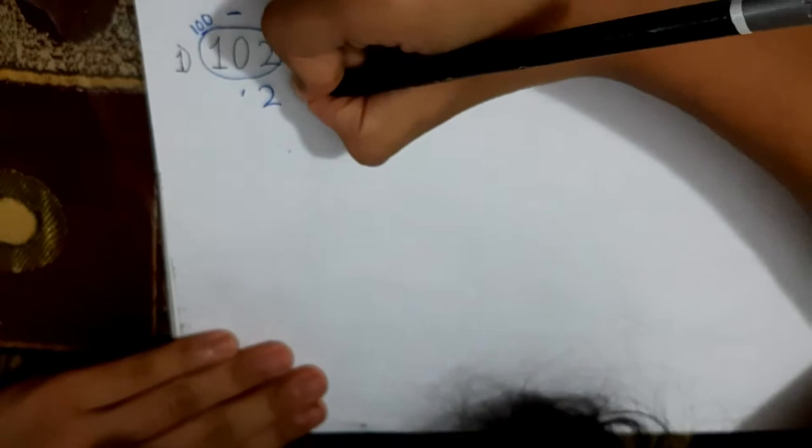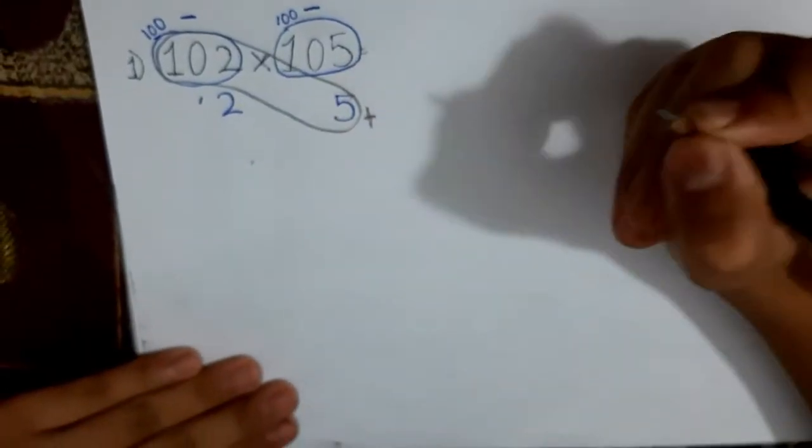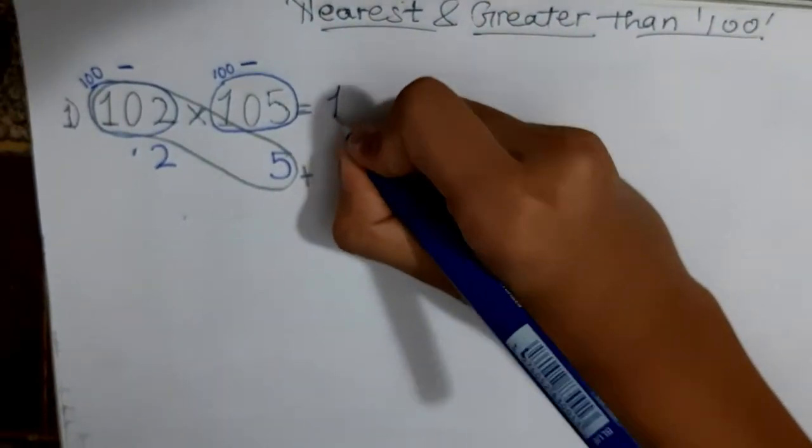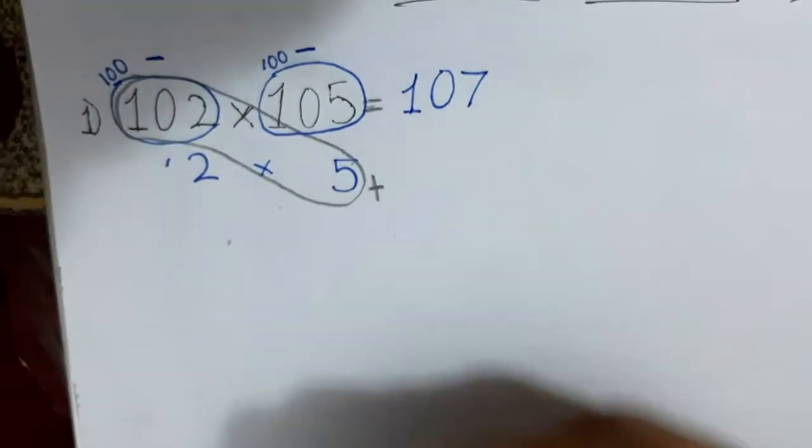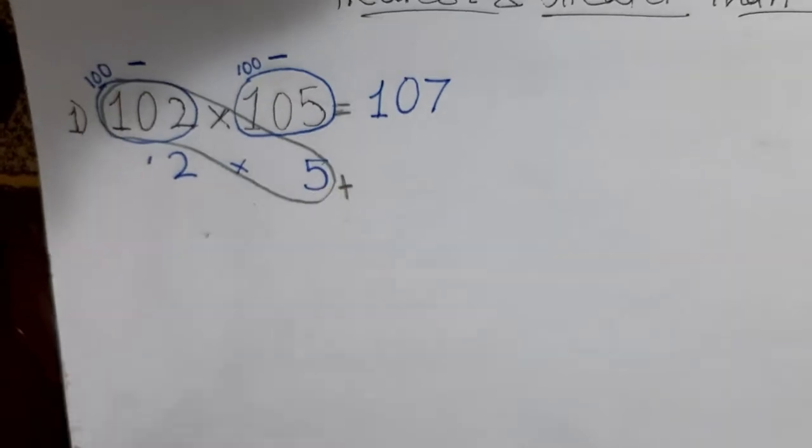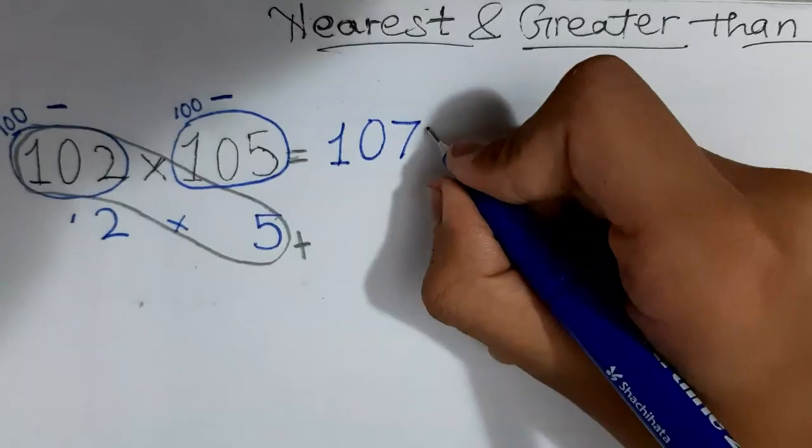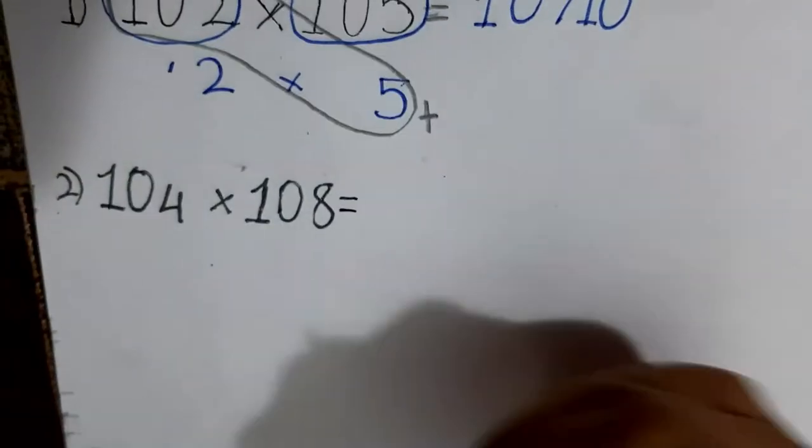Now, I add 102 and 5. Our answer is 107. Then, we have to multiply the 2 with the 5, and our answer we will get is 10. Now our answer is 10,710.